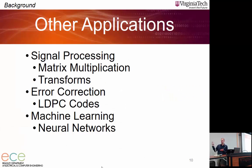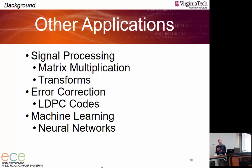Applications where this permutation problem appears include: any matrix multiplication, linear transforms like the discrete sine and cosine transforms, the Hadamard transform, error correction codes like LDPC codes and Viterbi decoding, and machine learning — specifically neural network processing, which involves heavy matrix multiplication.